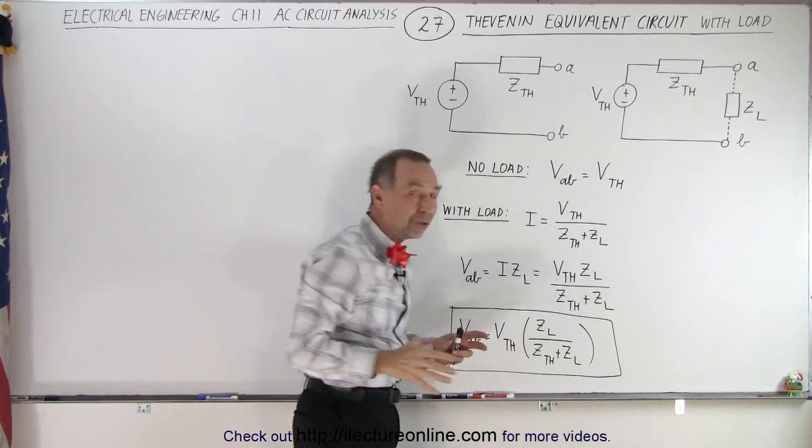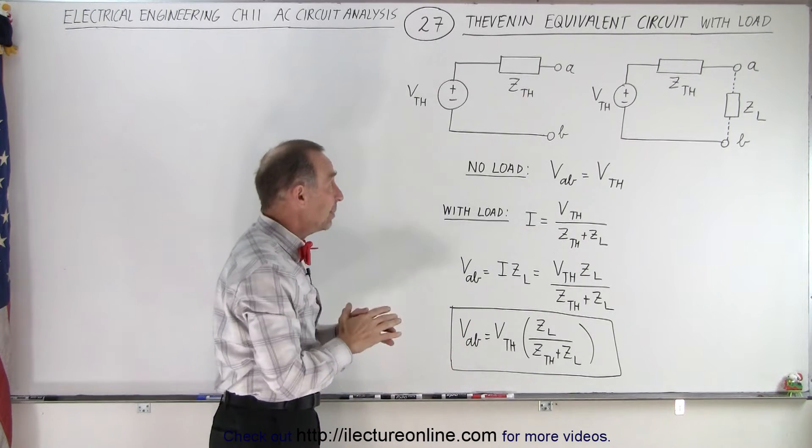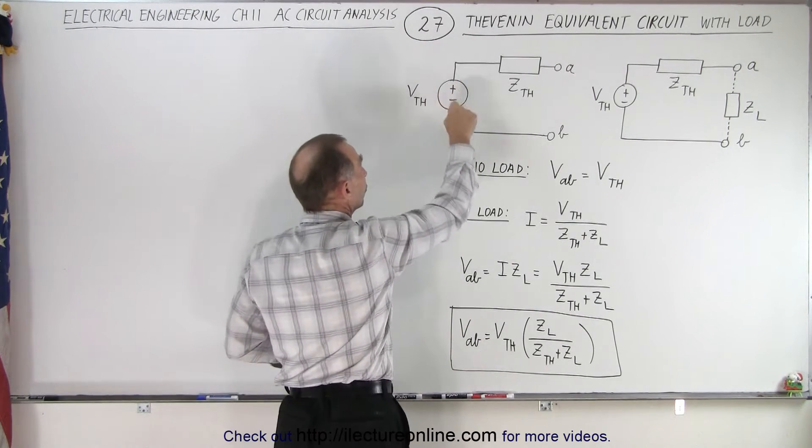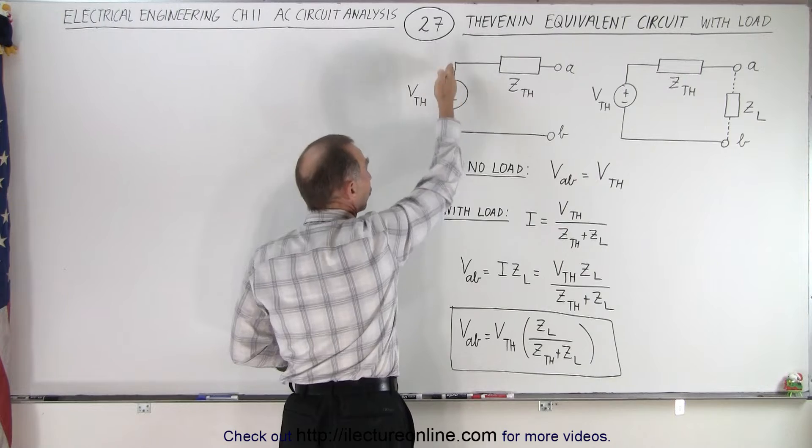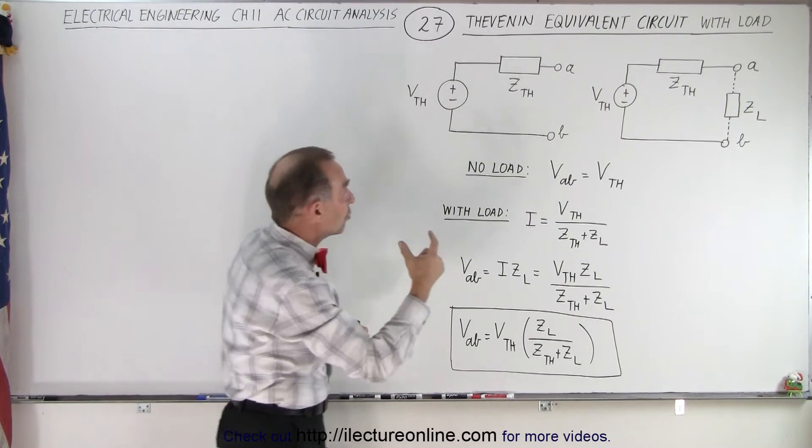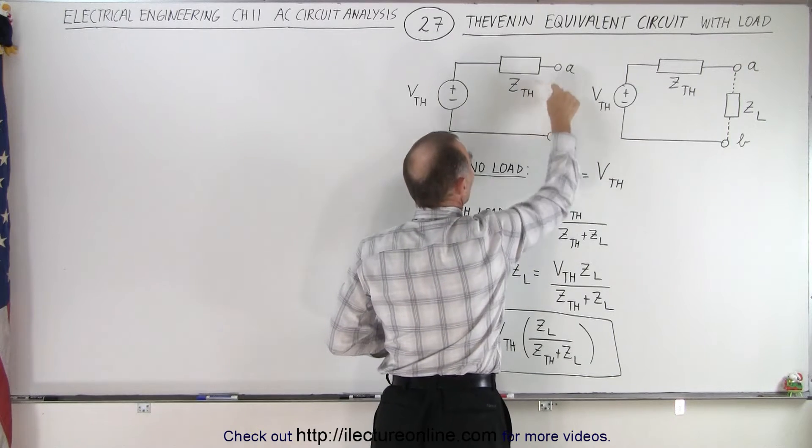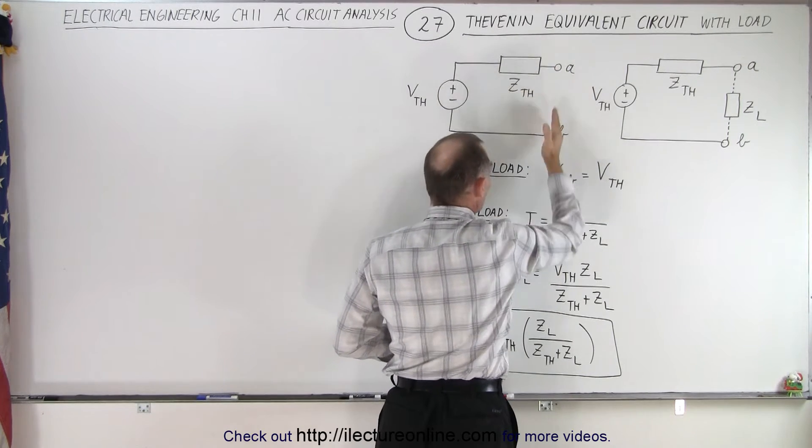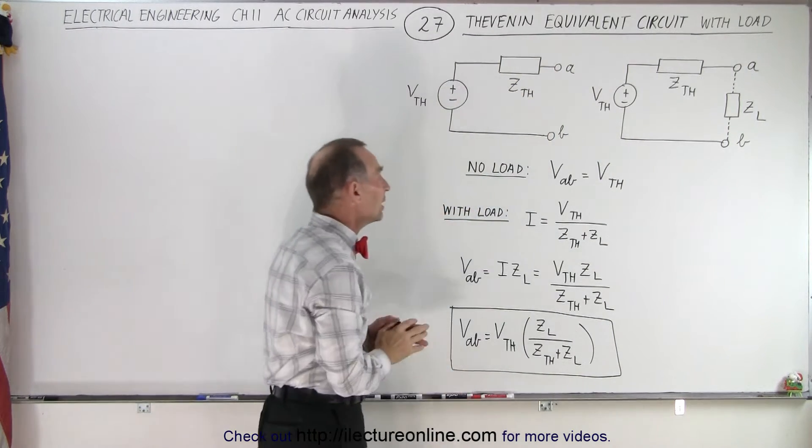You already know how to find the Thevenin impedance. You remove the sources - the voltage source becomes a short circuit, the current source becomes an open circuit - and then you calculate the impedance across the terminals from A to B, with no source, nothing connected between A and B.